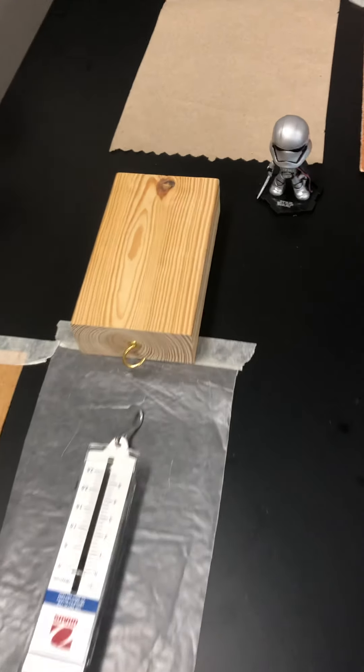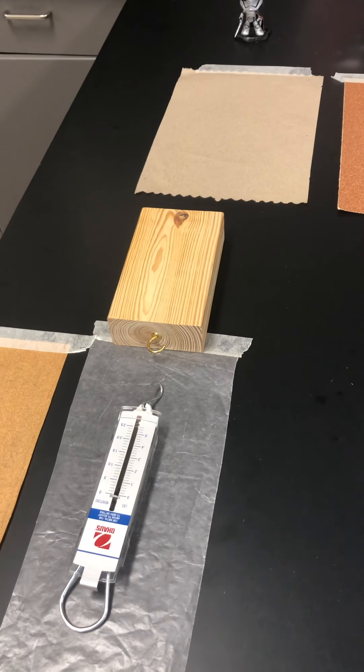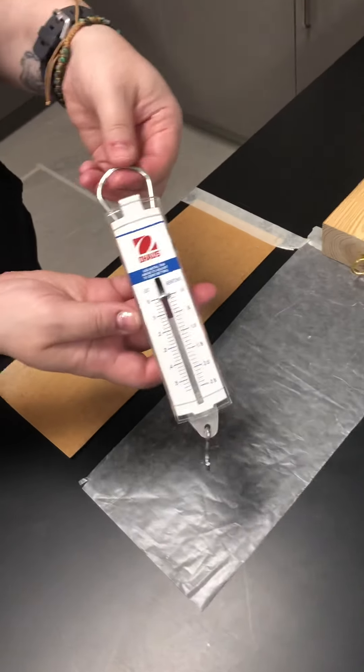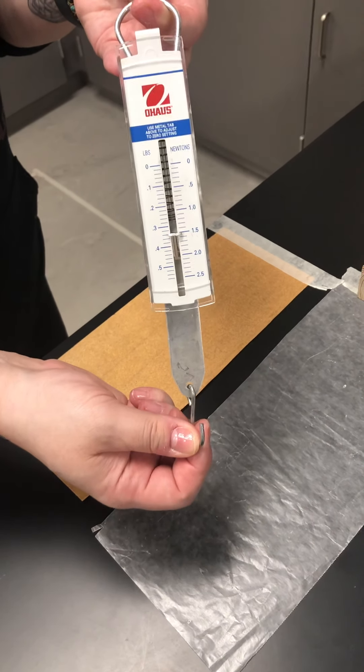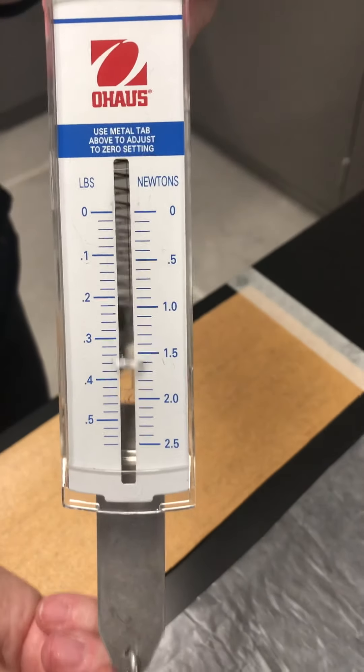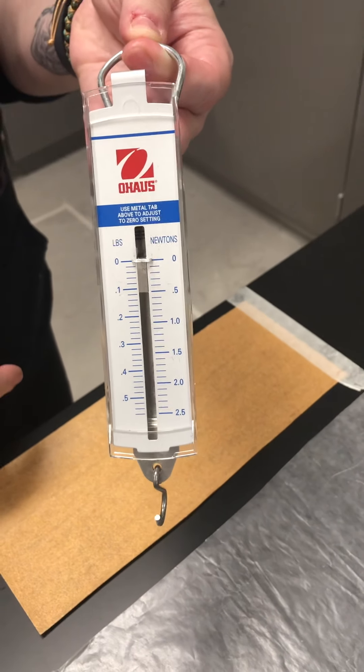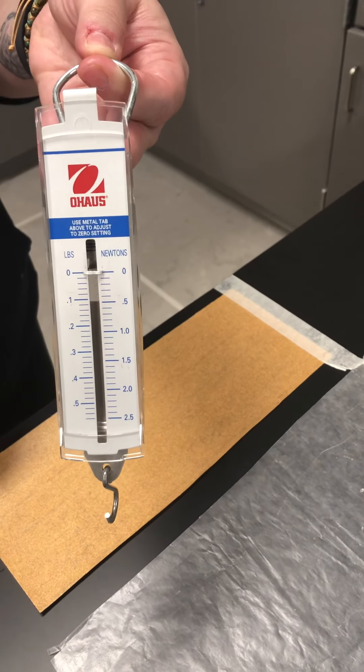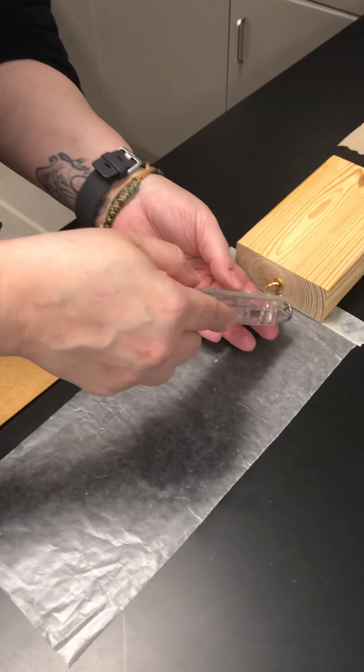And we have a wooden block here that will be pulled slowly and steadily across these different surface types and it will be attached to a spring scale. You may remember using a spring scale last year in earth science on the earthquake lab. It measures force and if we look close we'll see on the right side is newtons. We're going to be measuring force in newtons. This is a 2.5 newtons spring scale and we'll be attaching it to the wooden block and drawing that across the different surface types and measuring the frictional force.